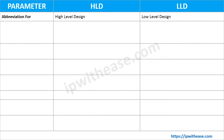The abbreviation for HLD is high level design, and the abbreviation for LLD is low level design. Sometimes HLD is also called macro level design, while LLD is also called micro level design of a system.